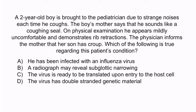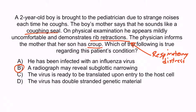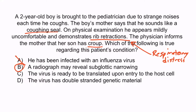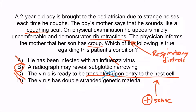Hopefully you noticed the barking cough — the mom says the boy sounds like a coughing seal — and the rib retractions demonstrate respiratory distress. The correct answer is B: a radiograph may reveal subglottic narrowing. Inflammation of the trachea and the subglottic region create that steeple sign, which can lead to a barking cough as well as stridor. Choice A is wrong because croup is parainfluenza virus, a type of paramyxovirus, not influenza. Choice C is wrong because this option describes a positive sense virus, and parainfluenza is a negative sense virus, which means it must first use its own RNA-dependent RNA polymerase to become a readable positive sense virus before it can be translated. Choice D is wrong because almost all RNA viruses are single-stranded — always assume the RNA virus is single-stranded unless something in the image indicates two strands.